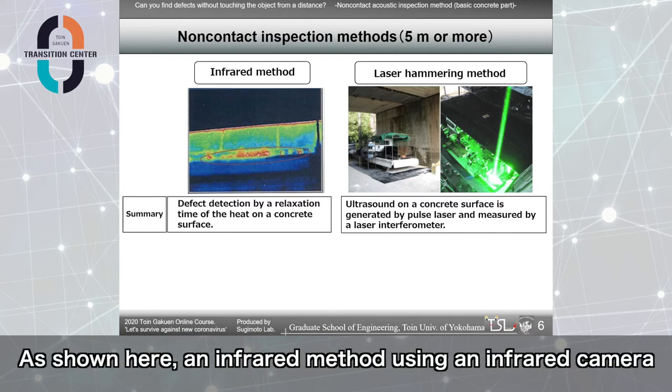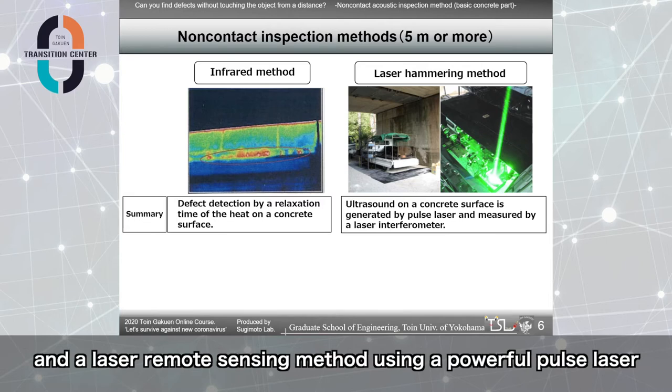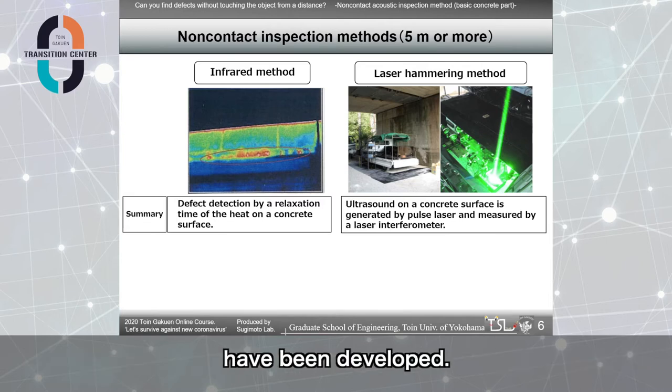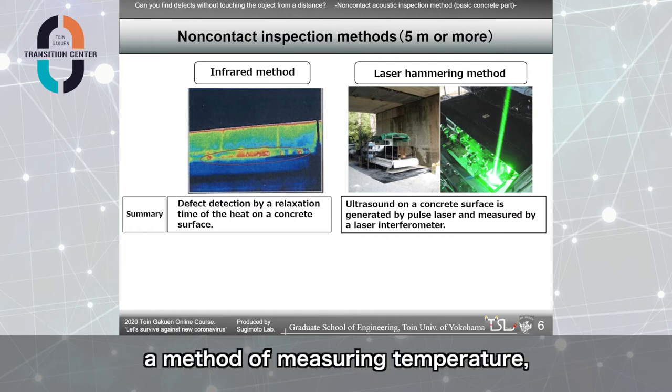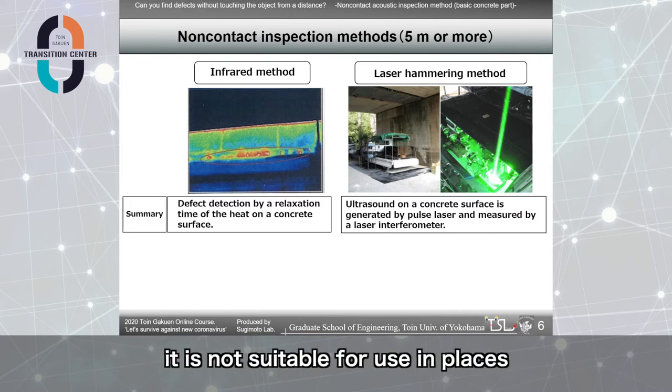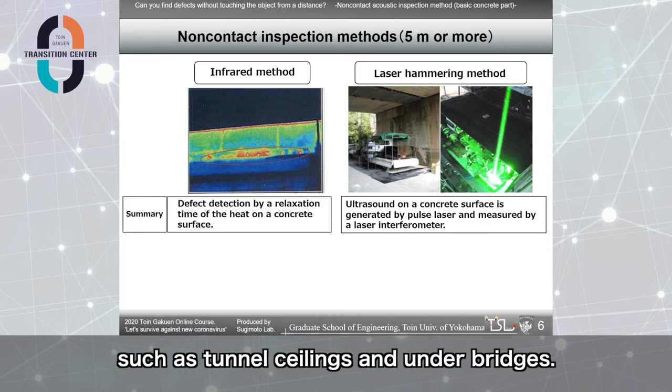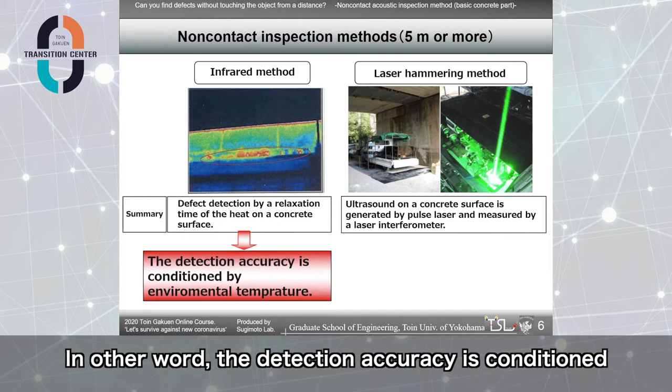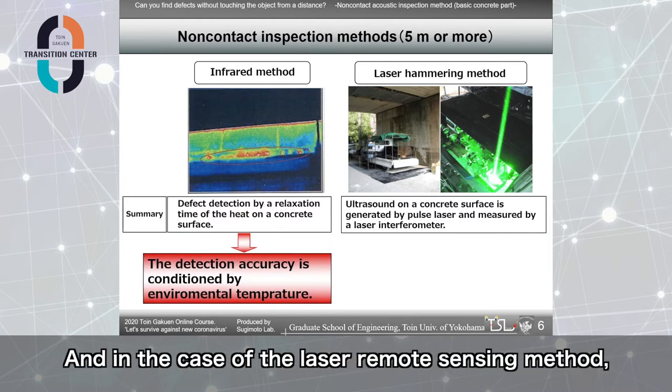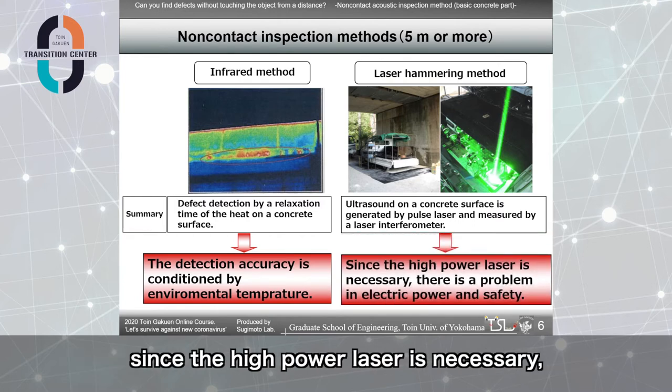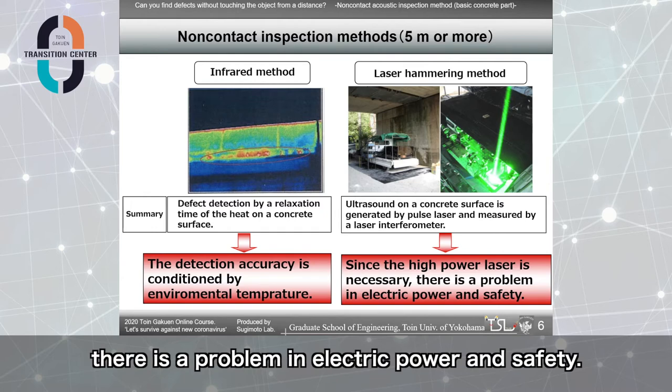As shown here, an infrared method using an infrared camera and a laser remote sensing method using a powerful pulse laser have been developed. However, since the infrared camera is basically a method of measuring temperature, it is not suitable for use in places where there is little temperature change, such as tunnel ceiling and under bridges. In other words, the detection accuracy is conditioned by environmental temperature. And in the case of the laser remote sensing method, since the high-power laser is necessary, there is a problem in electric power and safety.